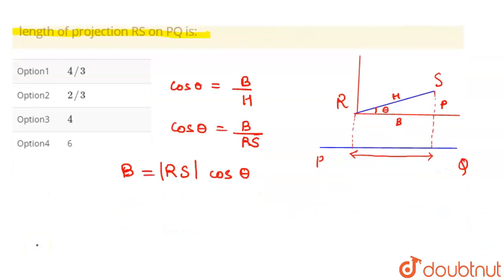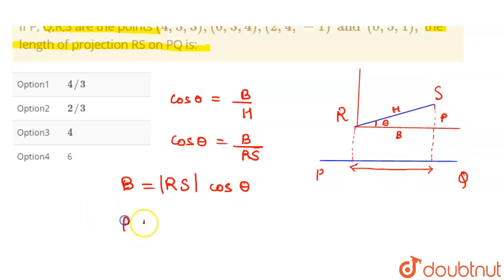We need to find the value of theta here. We have to find the projection on PQ line. We know that the dot product: if we do the dot product of PQ and RS, it will give us |PQ| |RS| cos θ. From here we can say that |RS| cos θ will be equal to...